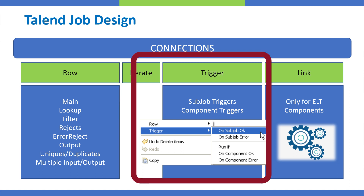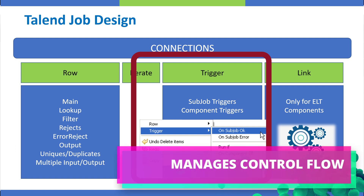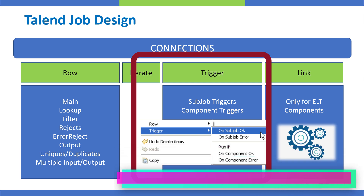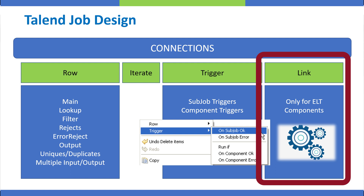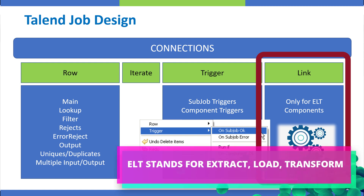Then we have the trigger component. The trigger component is not to handle data, but it's like a control mechanism. It tells us what we are going to do when a component has finished its execution — for example, if a component failed or if it passed. And then we have the link connection, which is only used for ELT components, and for now this is out of the scope of the video.